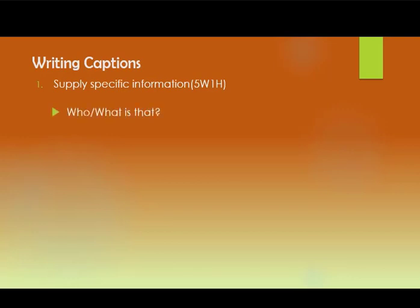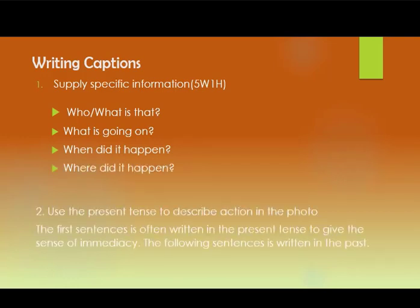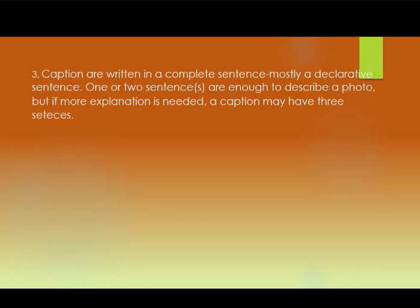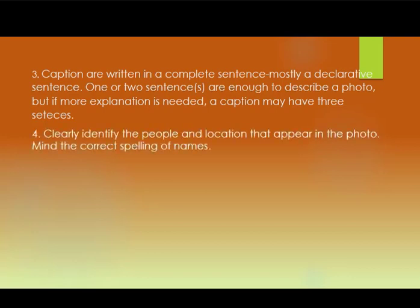First, we must supply: who or what is in the photo, what is happening, where it is happening, and when it is happening. Second, use the present tense — even if the event happened 10 minutes ago, 2 hours ago, or even 1 day ago — to convey a sense of immediacy. Third, the caption must be written in complete sentences, and it is usually written in affirmative or declarative form. Also, be clear in identifying people and locations that appear in the photo.